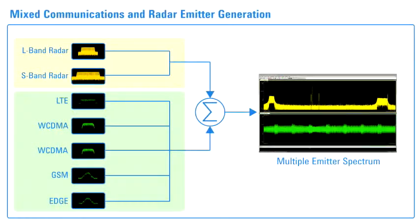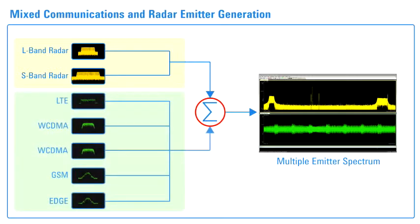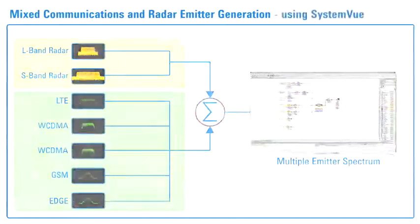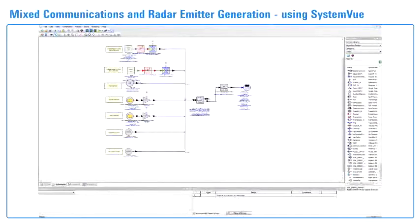Let's start by creating the multi-emitter signal. The composition is two radar signals, L-band and S-band combined, with five wireless signals, one of which serves as an interferer.